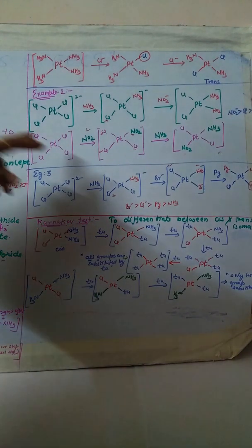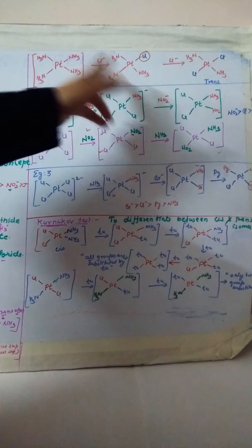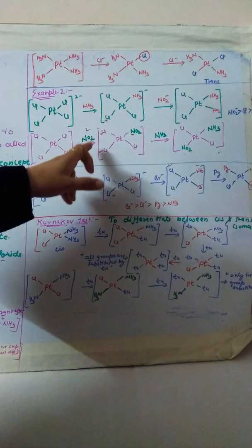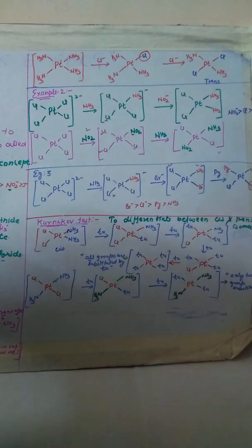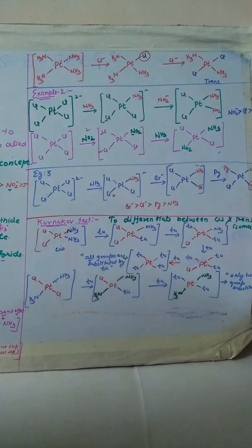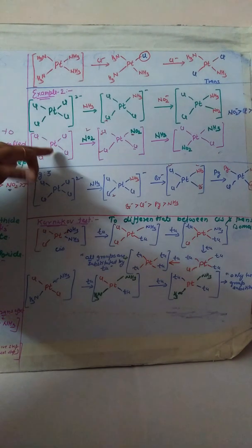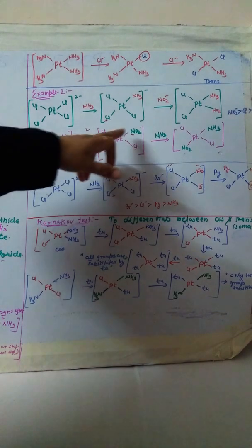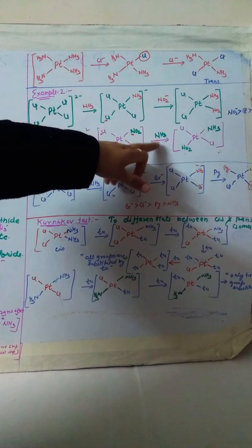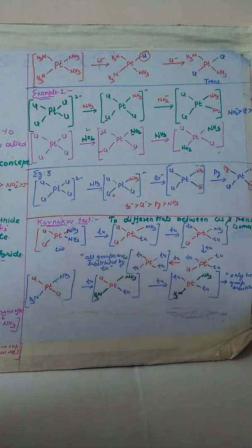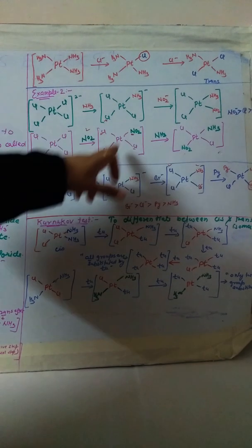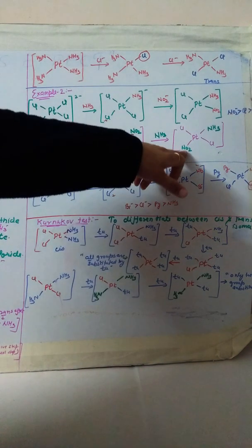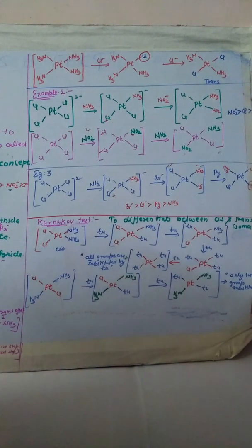In a second variation of this example, if we reverse the pattern — first adding nitro, then adding ammonia — starting again from tetrachloroplatinate, the nitro substitutes anywhere first. Then, since nitro has a stronger trans directing effect, the ligand trans to nitro gets substituted when ammonia is added, giving a different product.